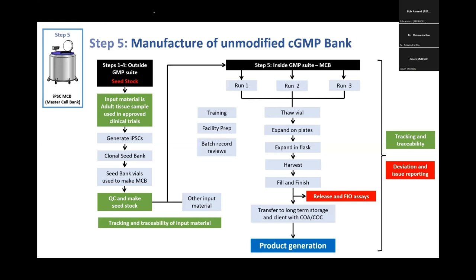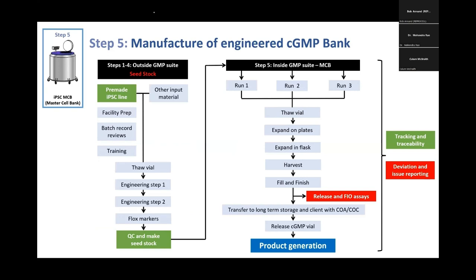Any CDMO that does manufacturing knows how to do this, and there is very good FDA guidance for all these steps and processes. Once you have these elements, you have what would be considered GMP-qualified material, which is then your starting material to make your final product.